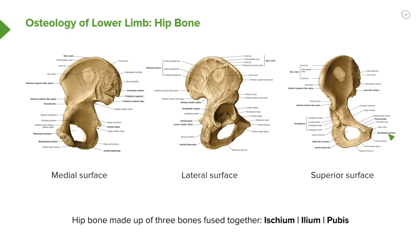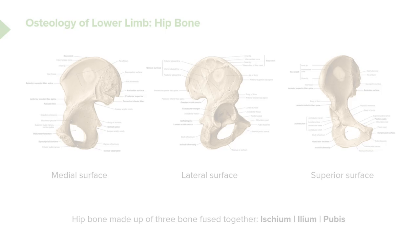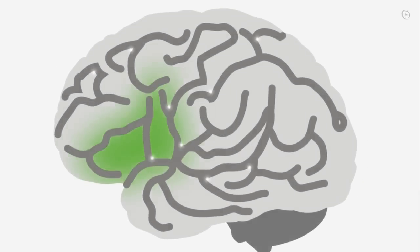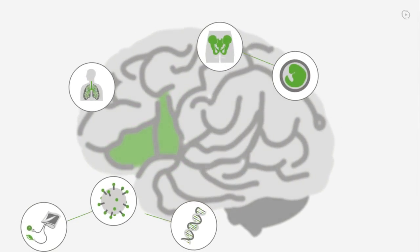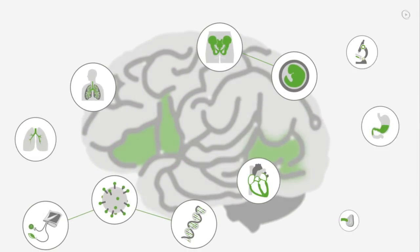And we can make out the ischium, the ilium, and the pubis for all of these bones.